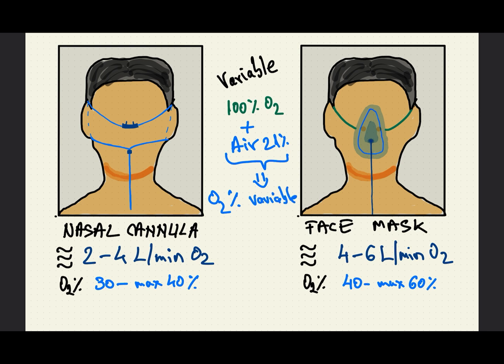Let's have a look at different devices. On the left-hand side here we have the nasal cannula. It uses low flows of oxygen, for example 2 to 4 liters. Higher flows are actually uncomfortable to patients because they dry out the nose. So this low flow of oxygen, when mixing with air, only achieves concentrations of 30 to maximum 40% oxygen from the gas mixture which reaches the alveoli.